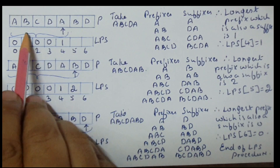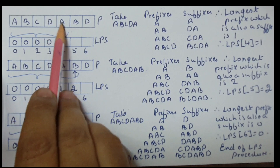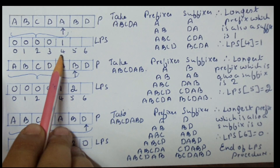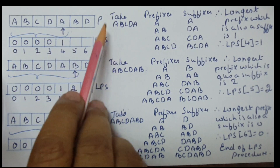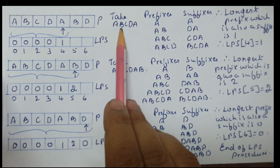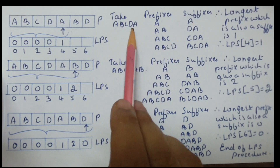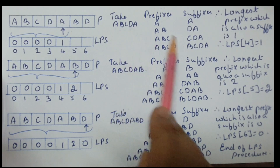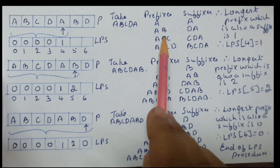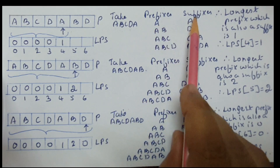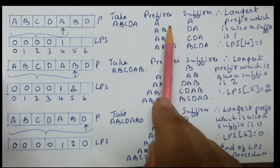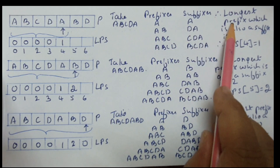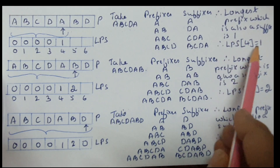Step 5: five characters ABCDA are considered and LPS[4] has to be filled. Prefixes are A, AB, ABC, ABCD; suffixes are A, DA, CDA, BCDA. Comparing prefixes and suffixes: prefix A matches suffix A. Their length is 1. Hence the longest prefix which is also suffix is 1. LPS[4] = 1.